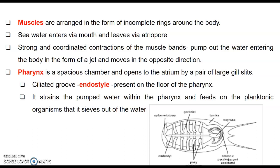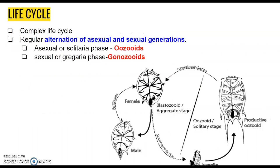The pharynx is a spacious chamber and it opens into the atrium via large gill slits. They have a pair of large gill slits. This pharynx has a ciliated groove in the floor which we call the endostyle, and this pharynx is used to strain the water that enters the body, filtering and feeding on planktonic organisms.